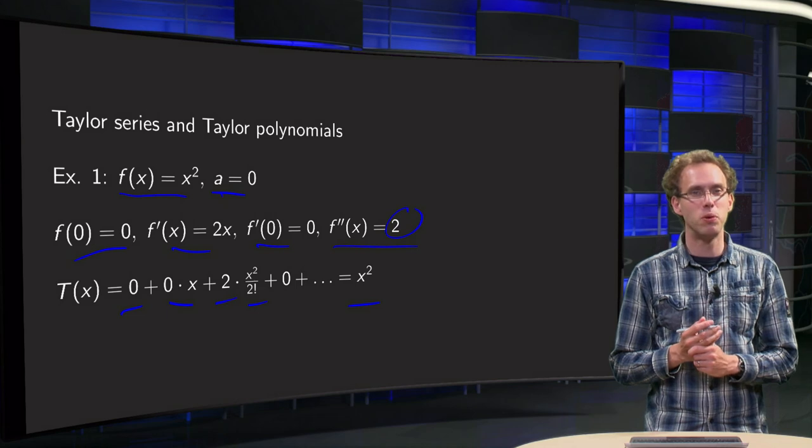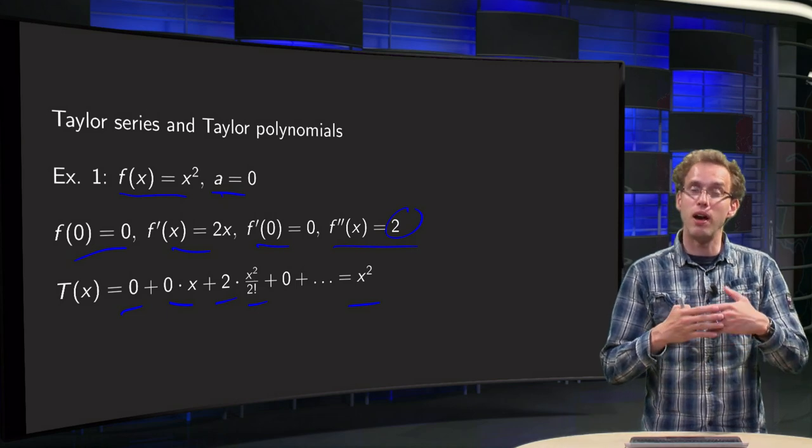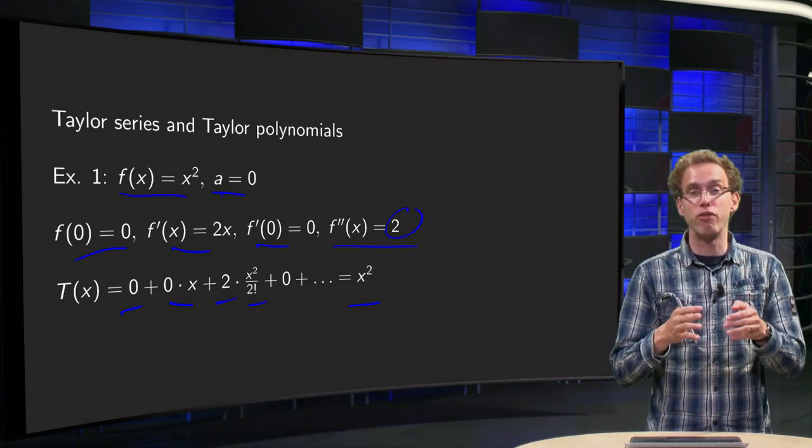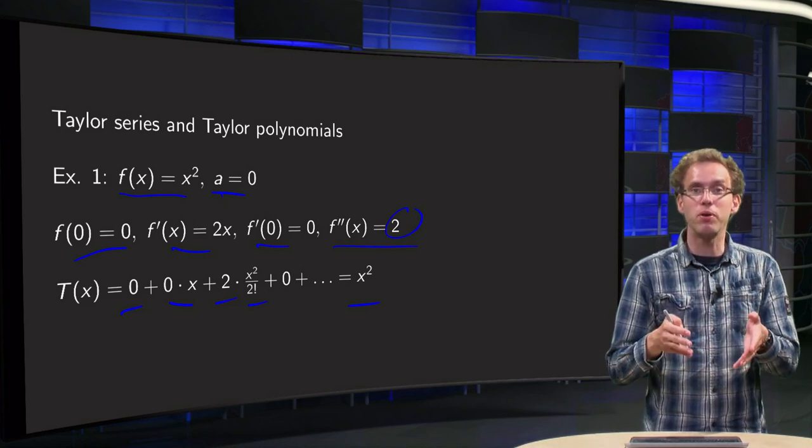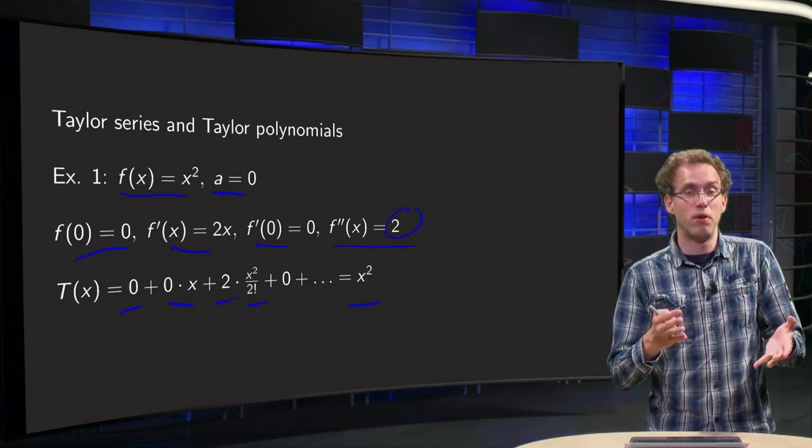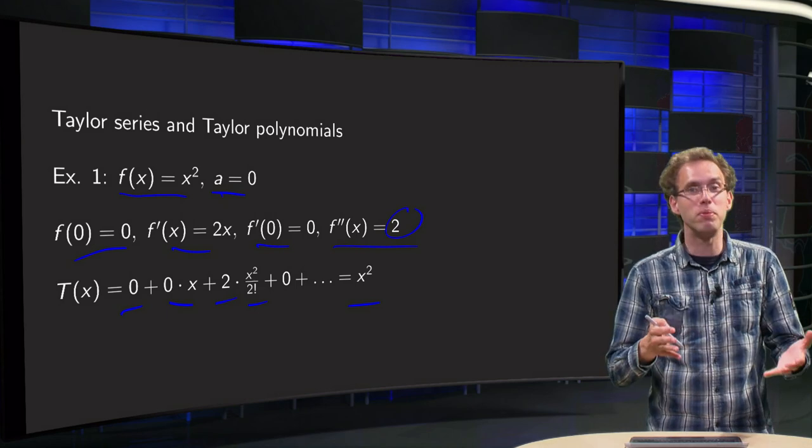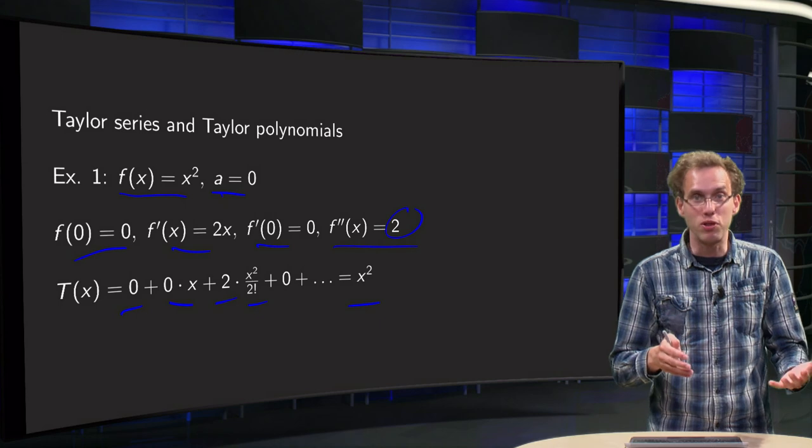Does that surprise you? I hope not, because the idea of Taylor series is that you approximate a function by some polynomial, but x² is already a polynomial, so if you approximate it by a polynomial you get of course exactly the same.